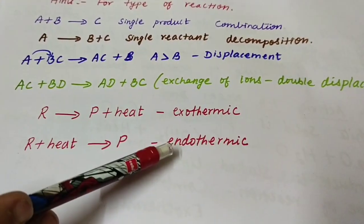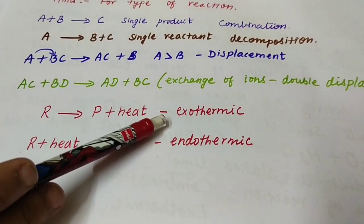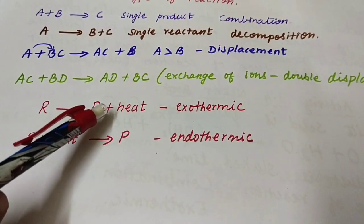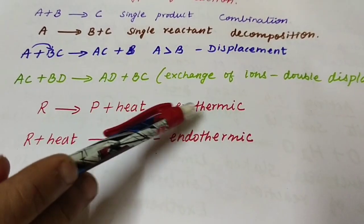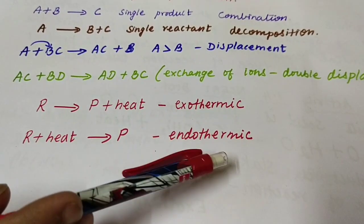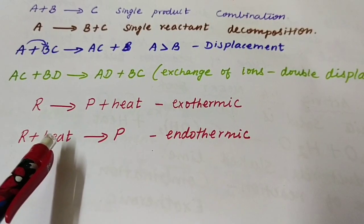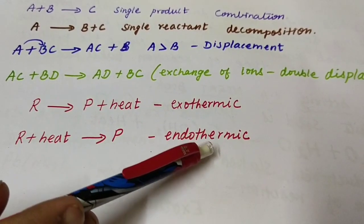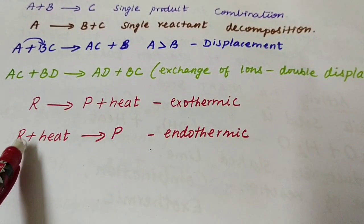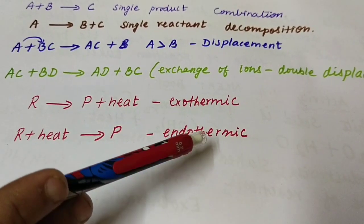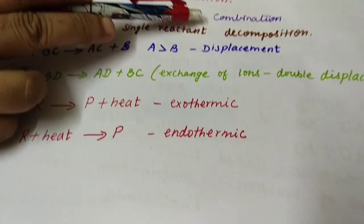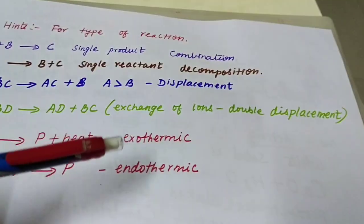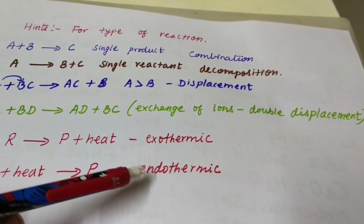Two more types: exothermic and endothermic. In an exothermic reaction, heat energy is given out — reactant → product + heat. In an endothermic reaction, heat or another form of energy is needed for the reaction — reactant + heat → product. In summary: combination, decomposition, displacement, double displacement, exothermic, and endothermic reactions.